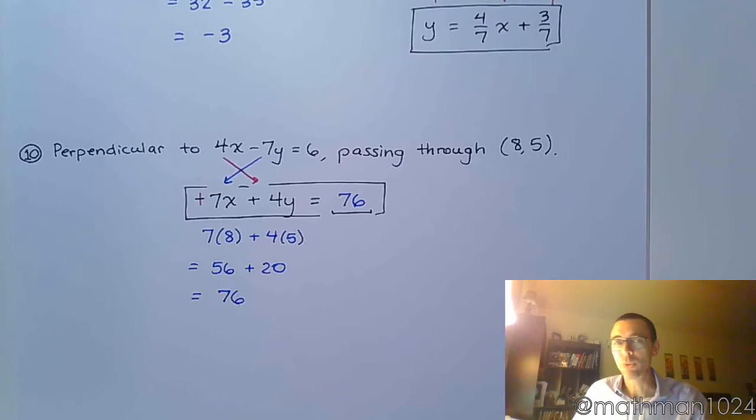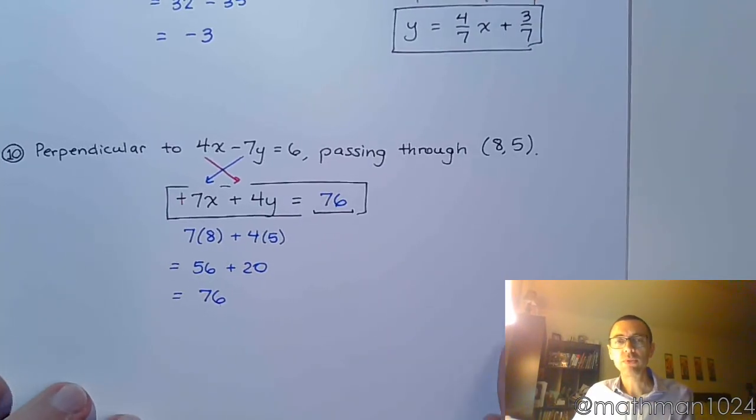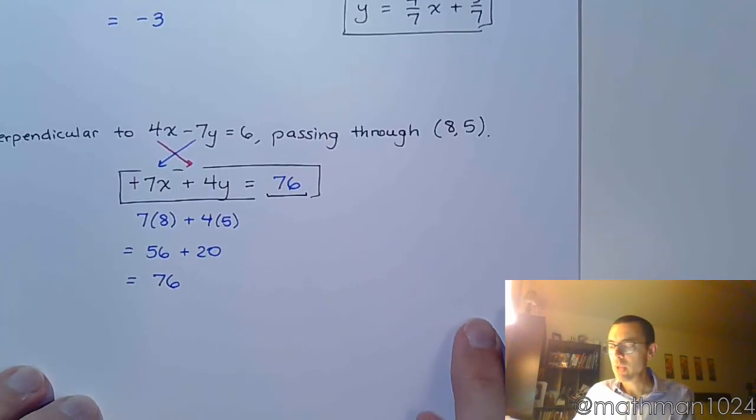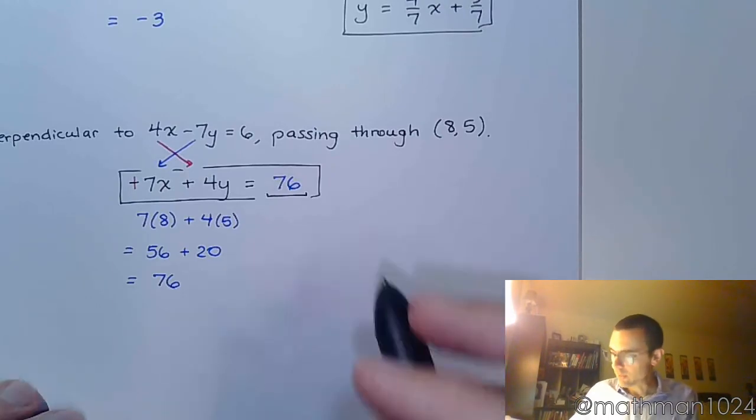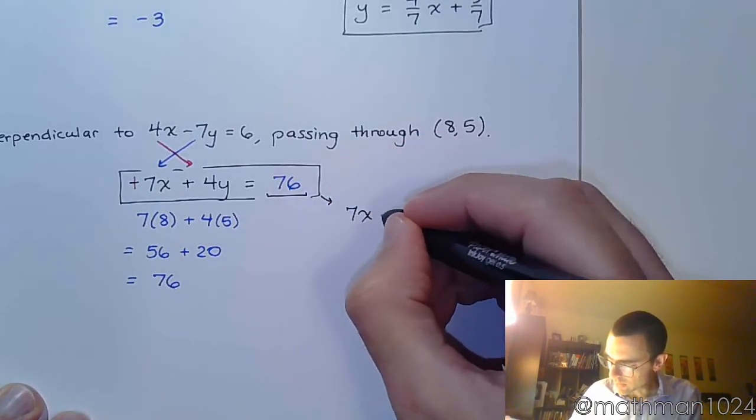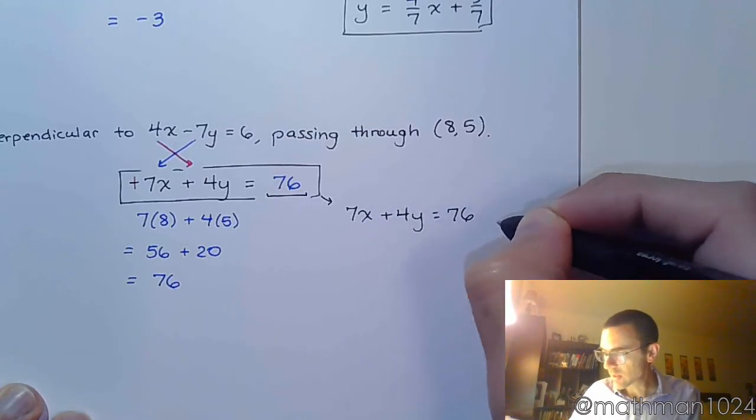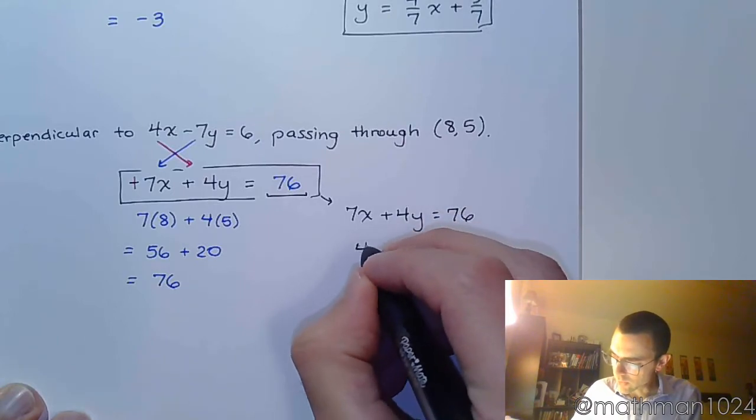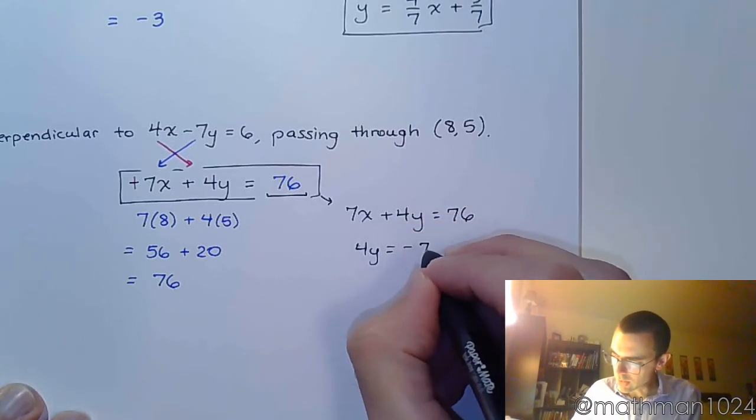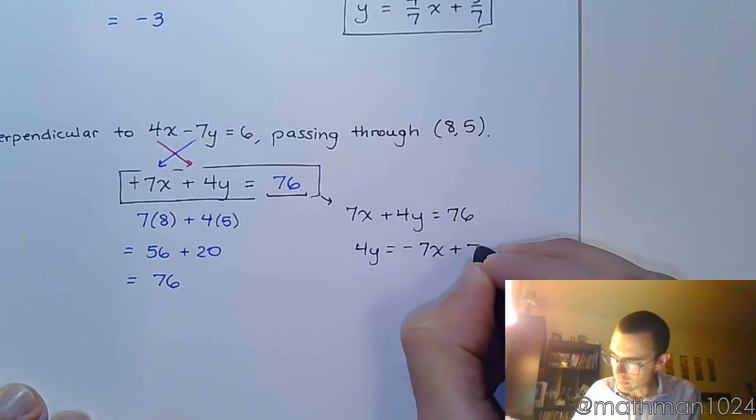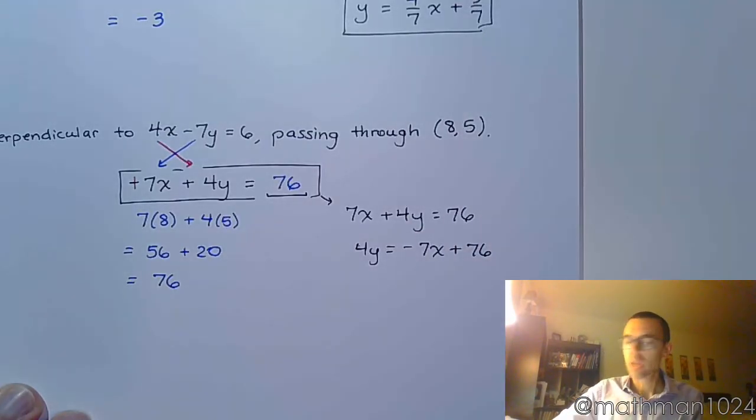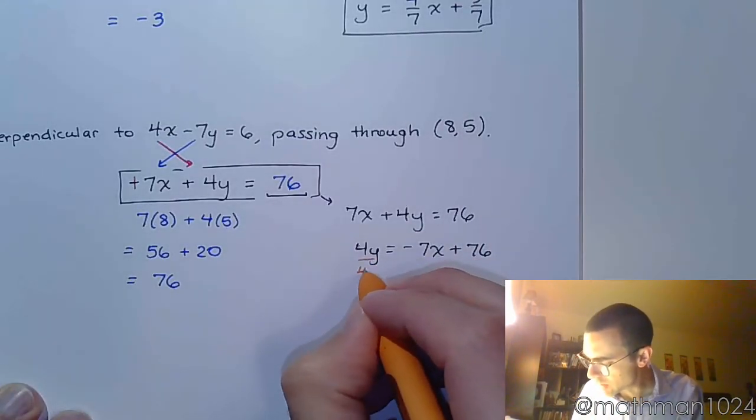If you were to solve this for y, let's see what we have. So let's rewrite this: 7x plus 4y equals 76. Solve it for y, so we've got to move the 7x to the other side. And then divide everything here by 4.